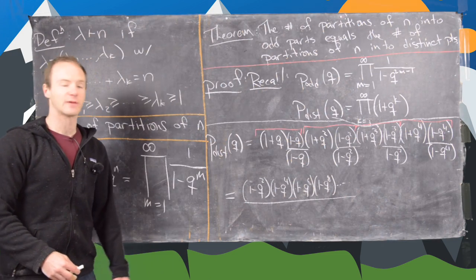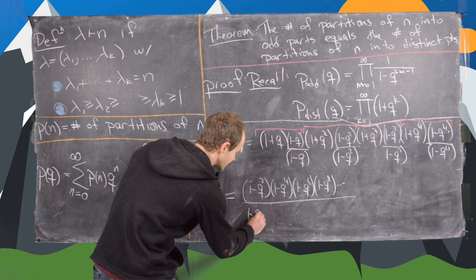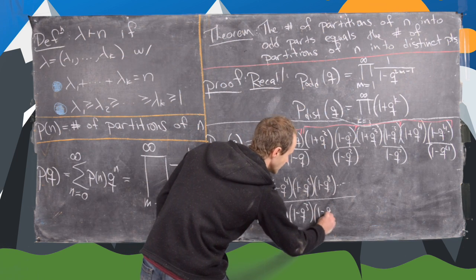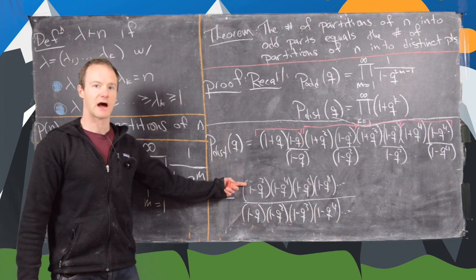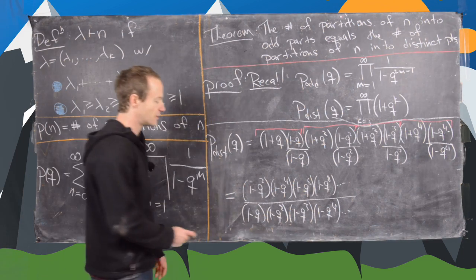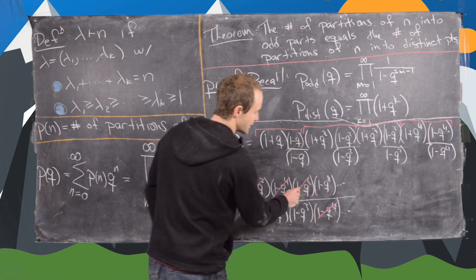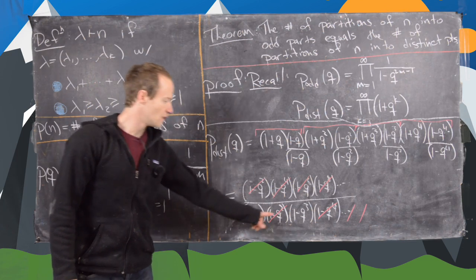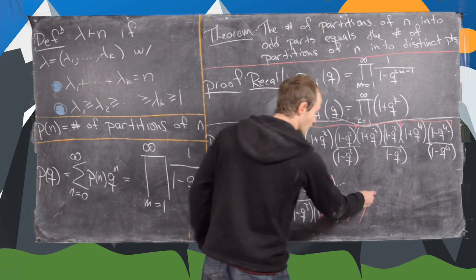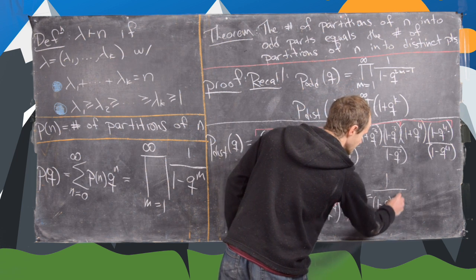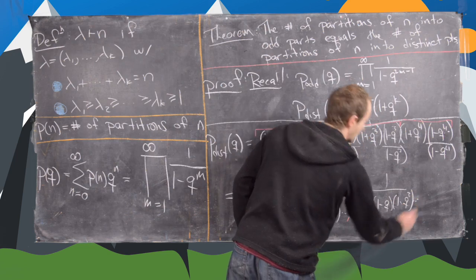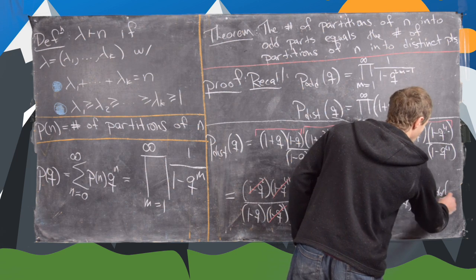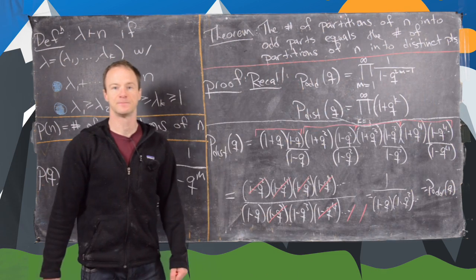In the denominator we have (1 - q) to every power: (1 - q), (1 - q²), (1 - q³), (1 - q⁴), and so on — so only even powers in the numerator and all powers in the denominator. The even powers cancel, leaving us with 1 over (1 - q)(1 - q³) and so on — that is, only the odd factors remain in the denominator. But that is exactly the generating function for partitions of n into odd parts. That finishes the proof.